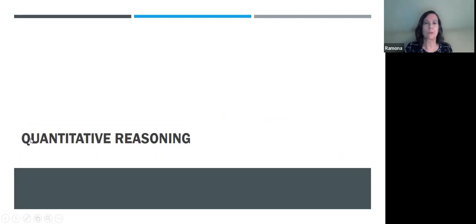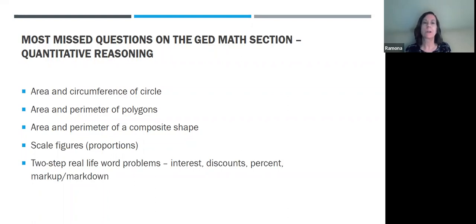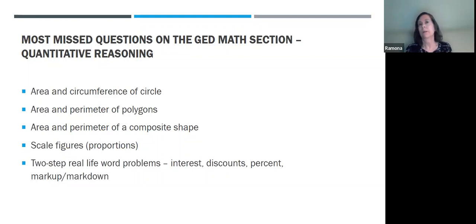So we're going to talk about quantitative reasoning. Here are the most missed questions in the quantitative reasoning section: area and circumference of circle, area and perimeter of polygons, area and perimeter of composite shapes, scale figures — which is just proportions — and then two-step real life word problems, which talks about interest, discounts, percent, markup, and markdown. I'm going to show you just a few little tips and tricks that might help for when working on these specific skills.